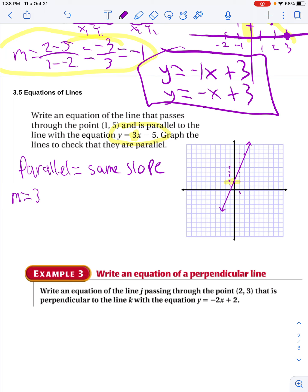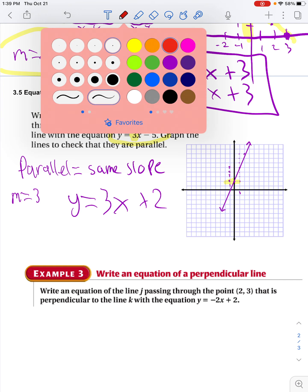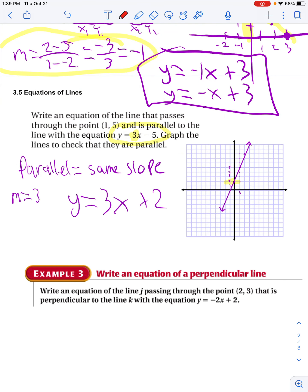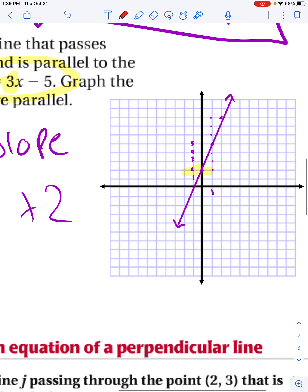So I could graph this, or I did graph this line. And then I'm going to say, alright, y equals 3x plus 2. That's my first line. I'm going to graph this second one that was given to me, 3x minus 5.